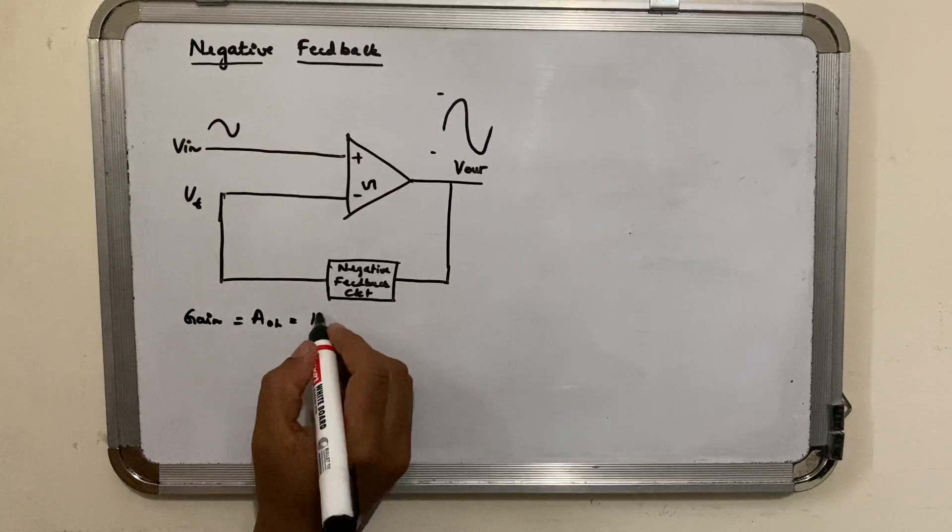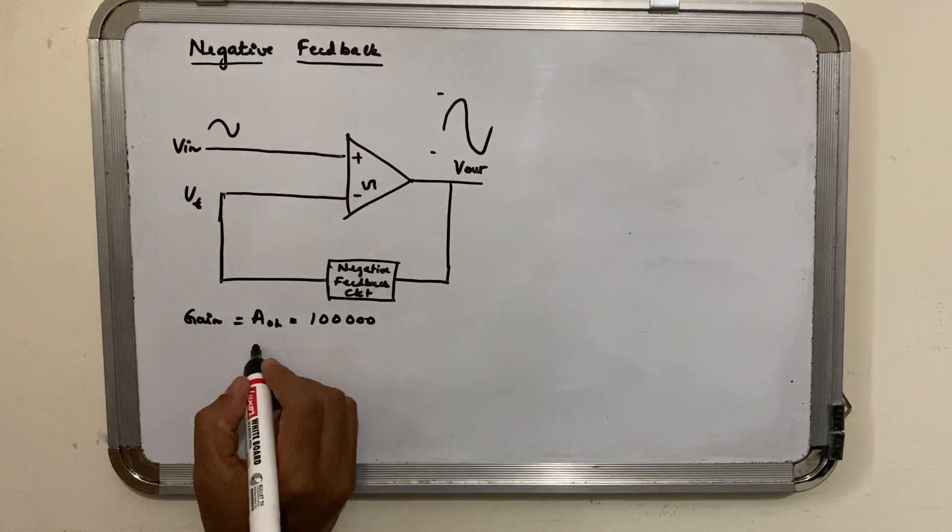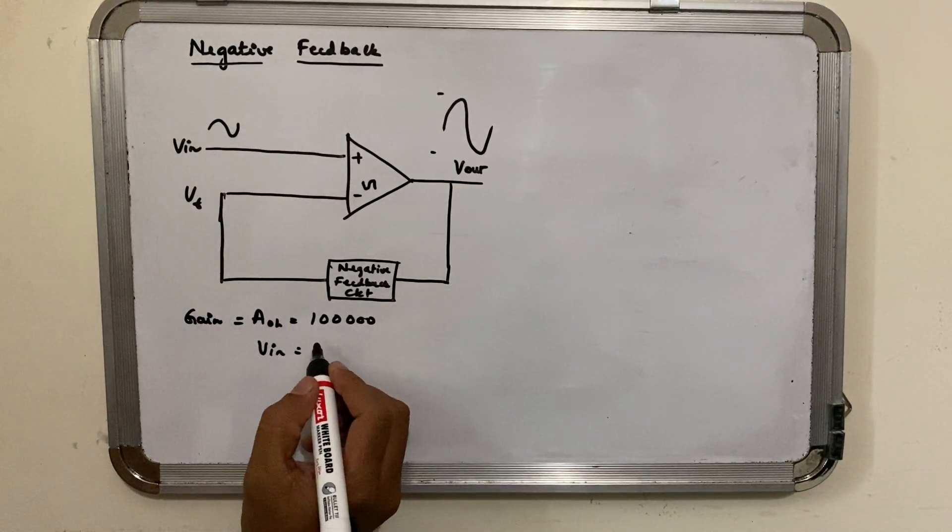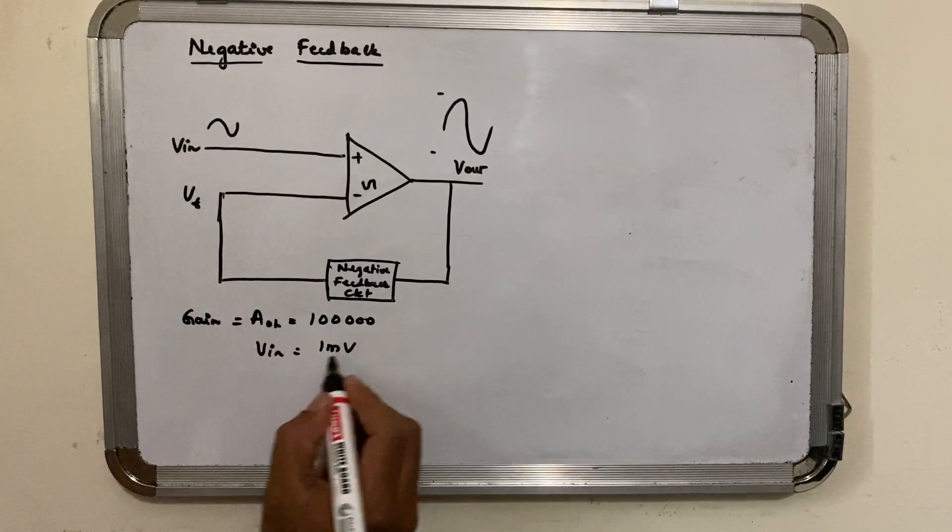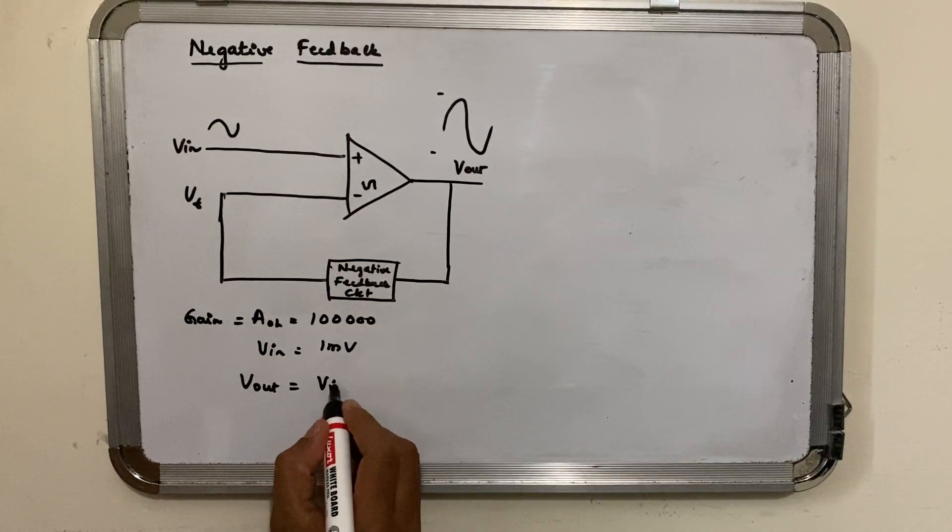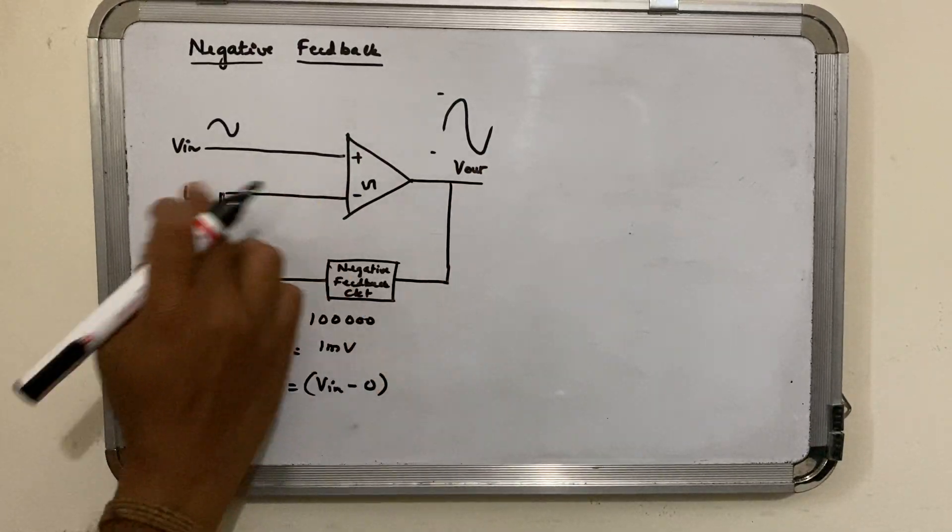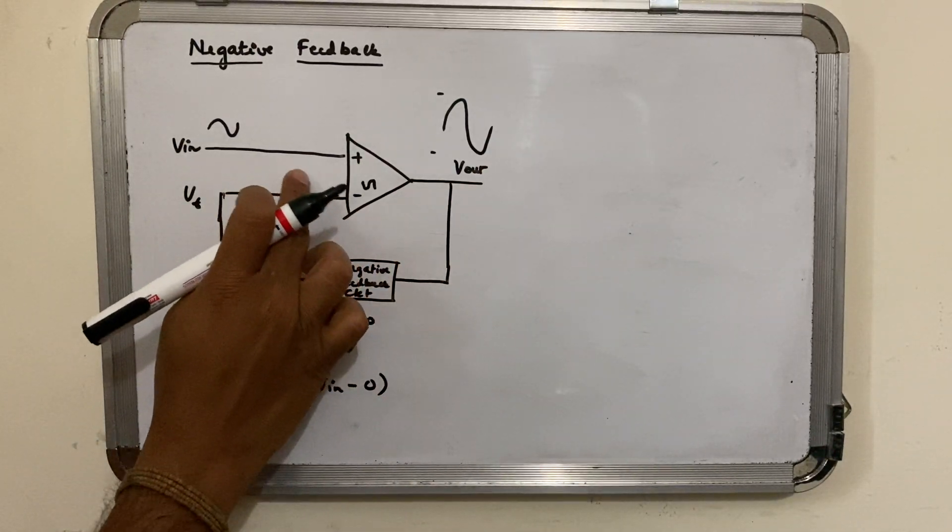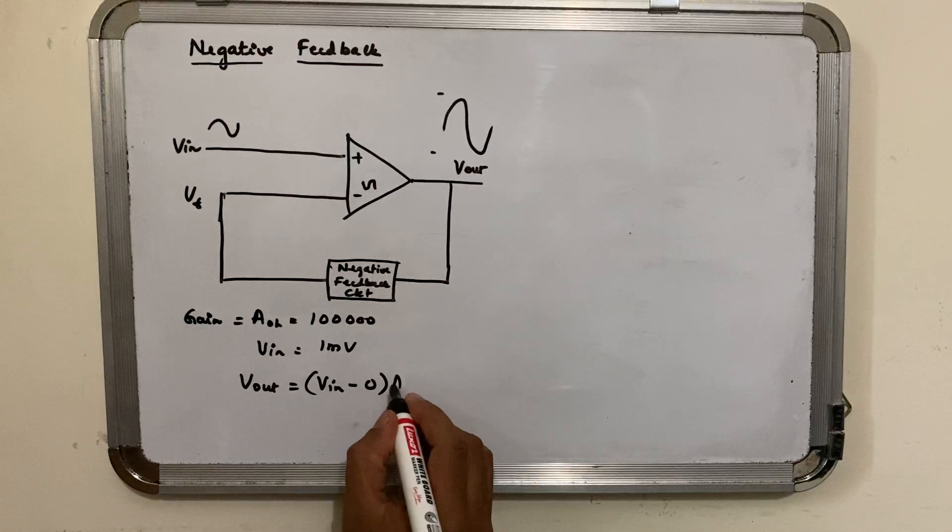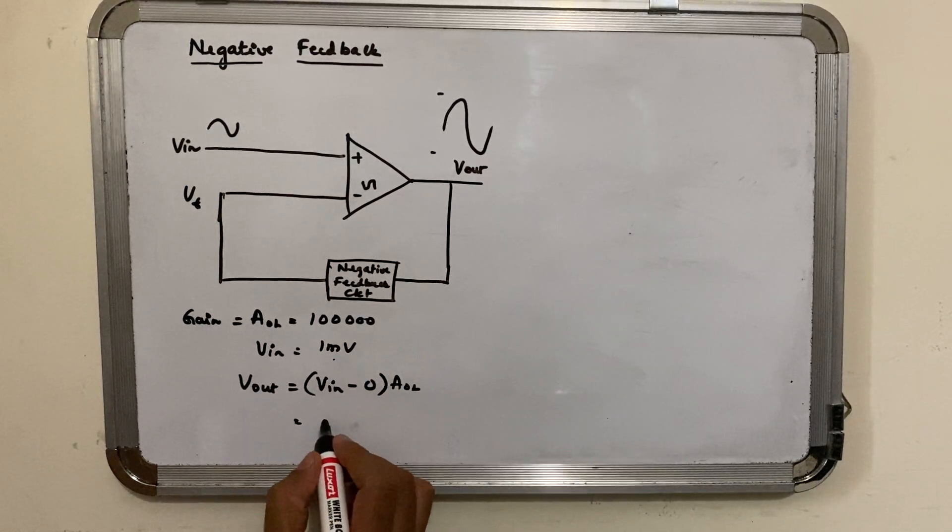A_OL happens to be, say for example, 10 lakh or 1 lakh. Now if I give a V input of somewhere around 1 millivolt, what is output? Output is (V_in minus 0) - the differential output. Initially we assume that this is 0 into A_OL. So this is 1 millivolt into 1 lakh - it will be 100 volts.